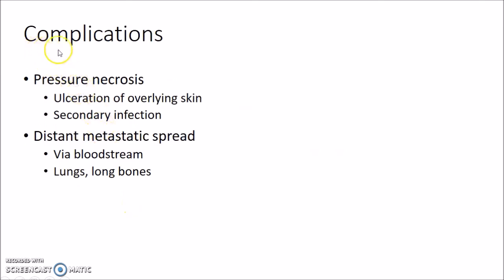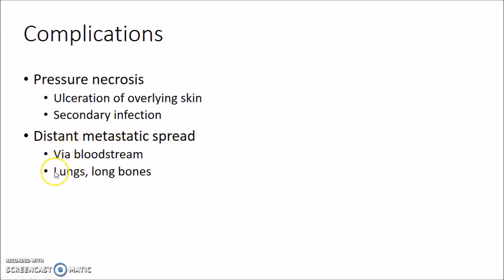The complications of Phyllodes Tumor include pressure necrosis, ulceration of the overlying skin, and secondary infection if not treated properly. In case of malignant Phyllodes Tumor, there can be distant metastatic spread via the bloodstream, involving the lungs and long bones.